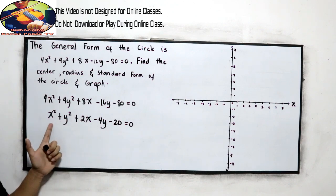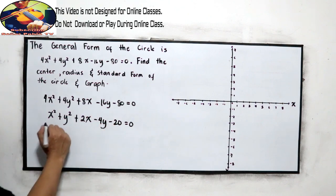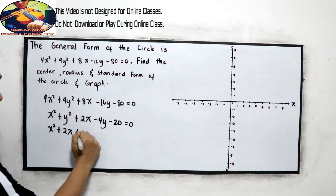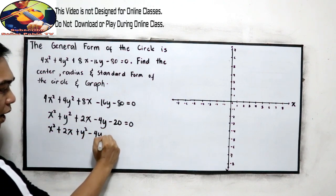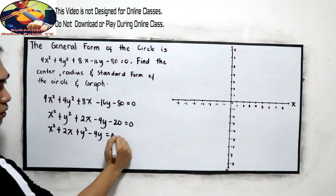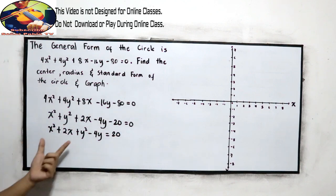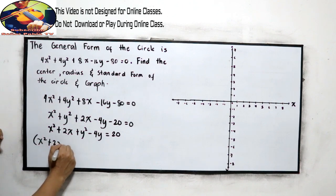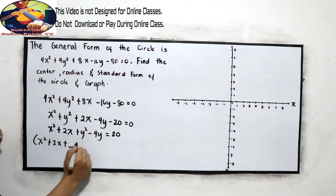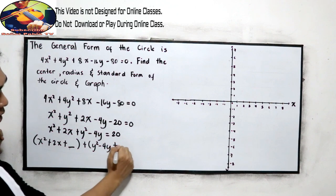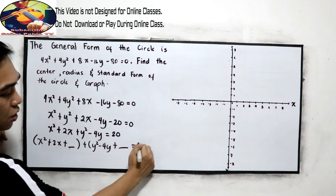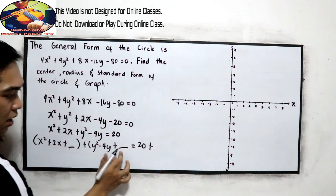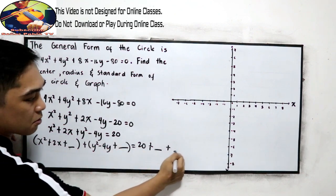Now, rearrange our general form. That will become x squared plus 2x plus y squared minus 4y equals positive 20. We added two blocks. Plus block plus y squared minus 4y plus block equals 20.